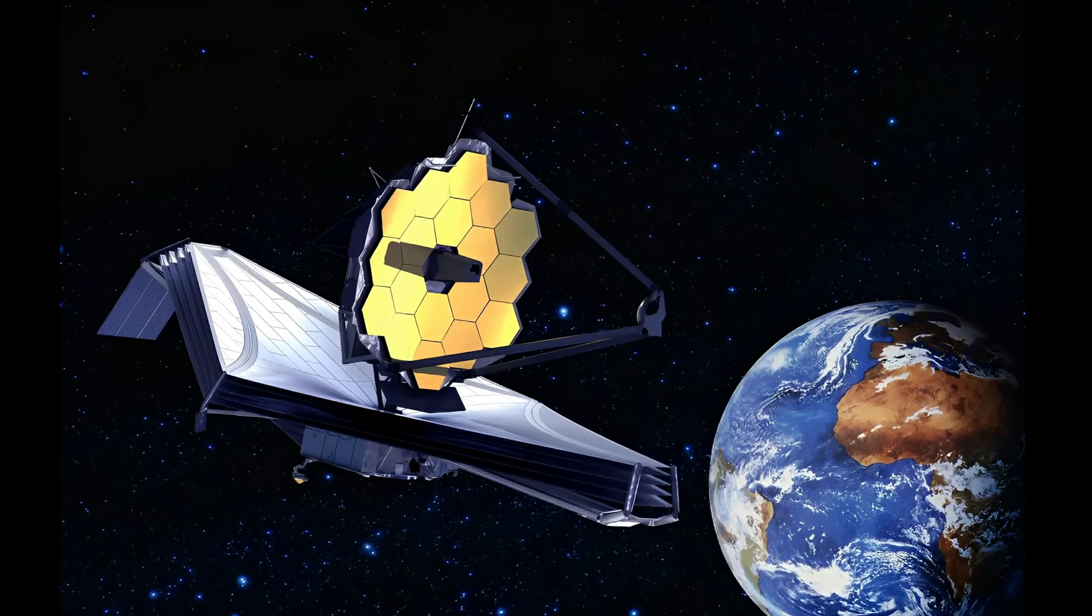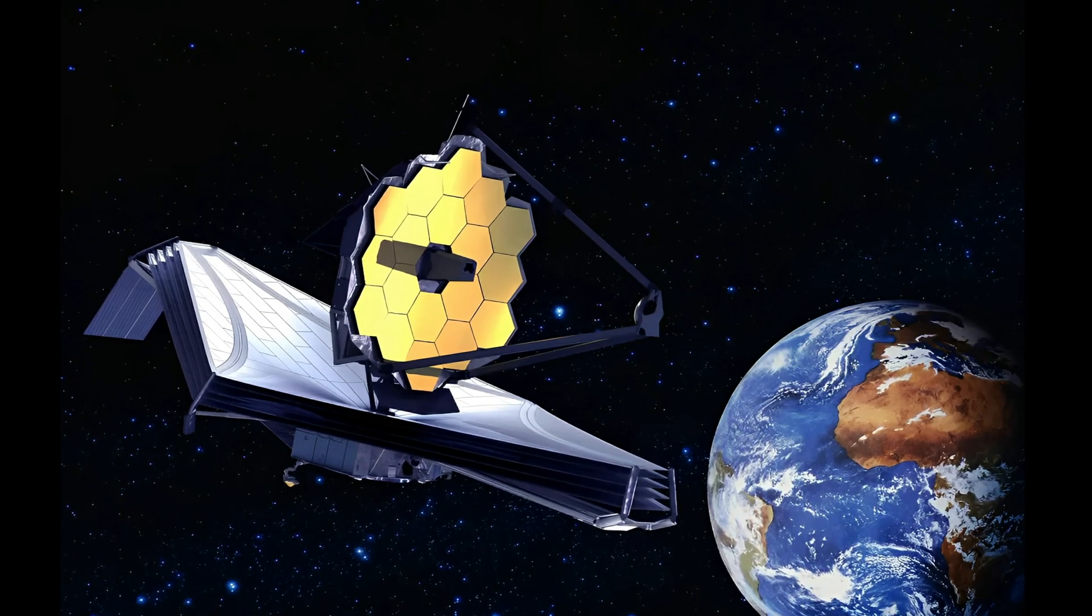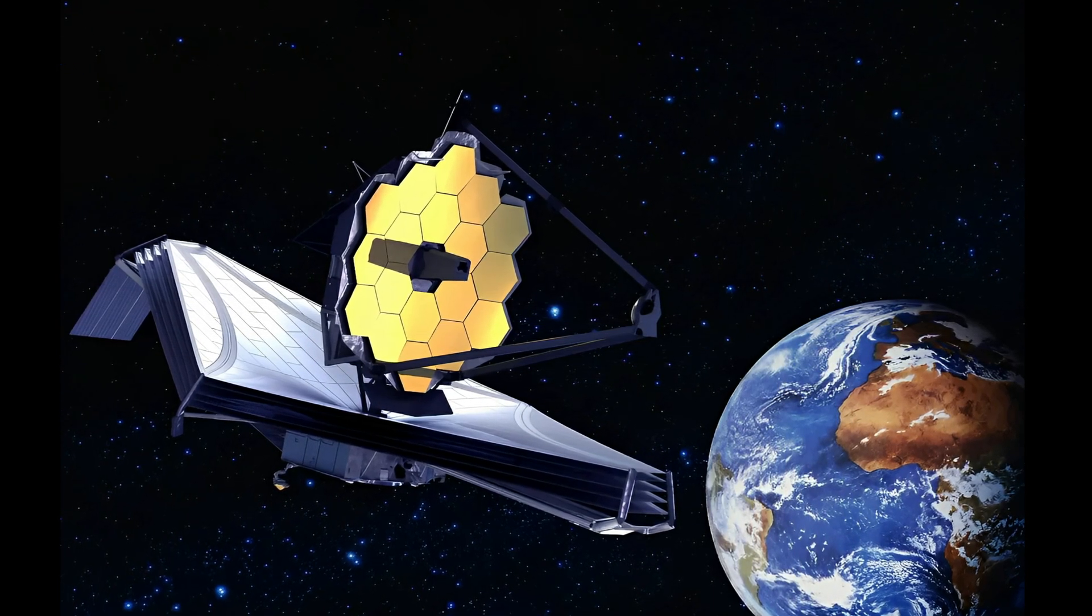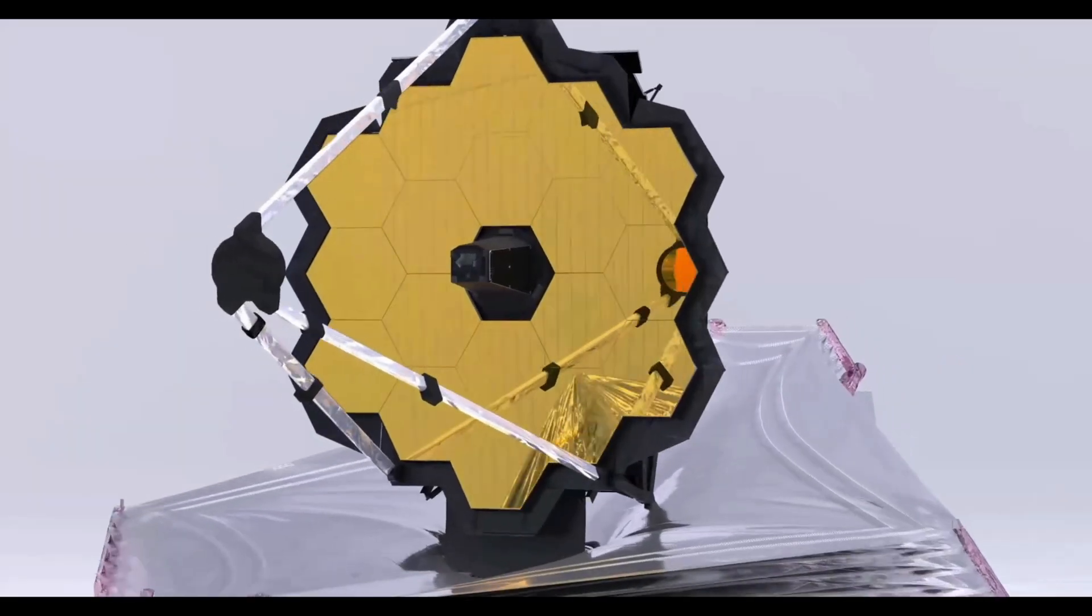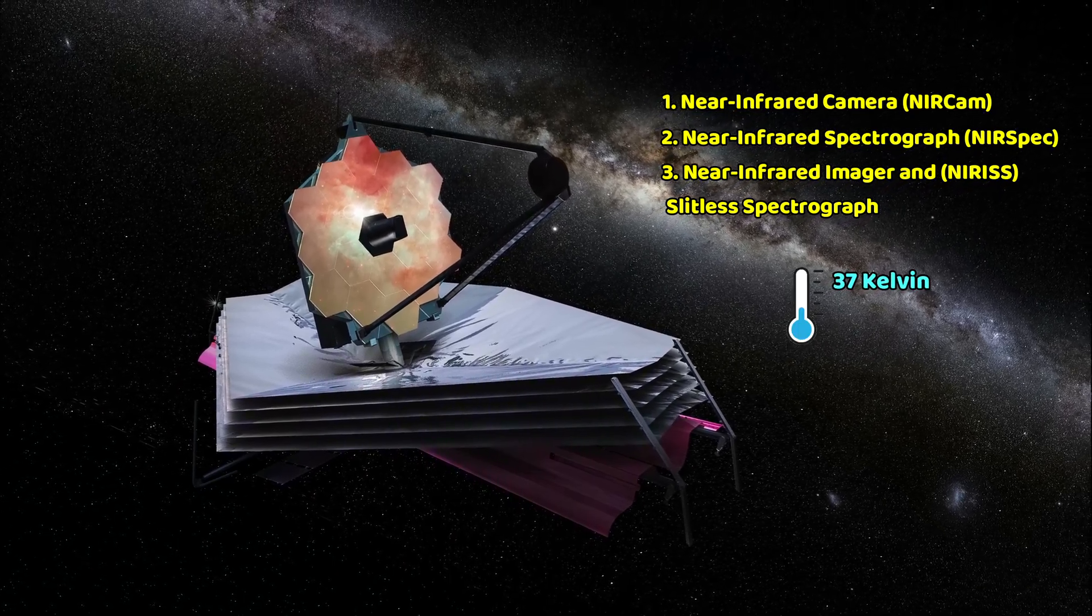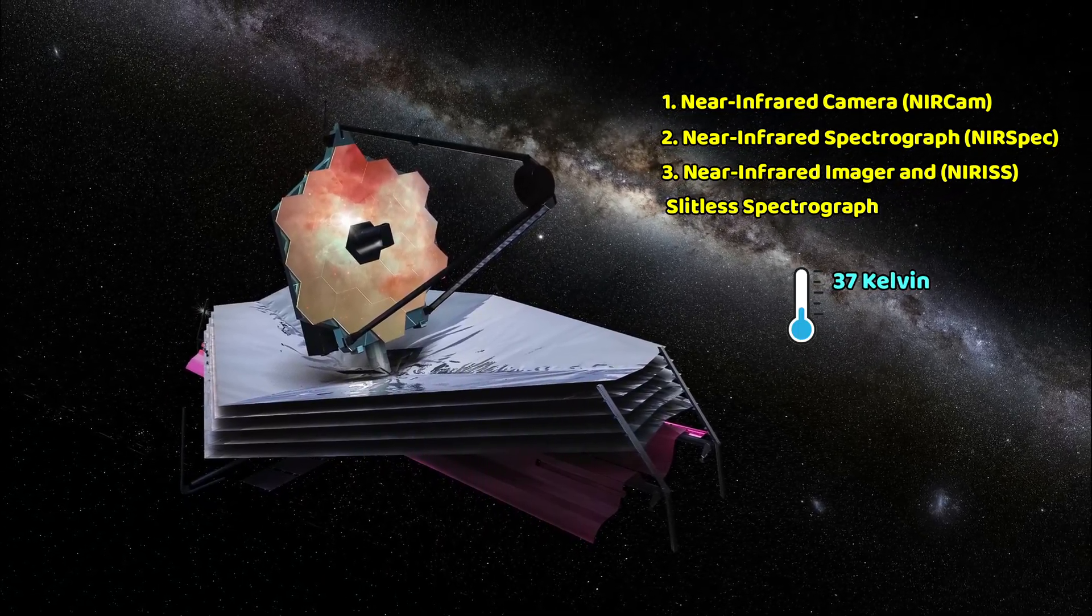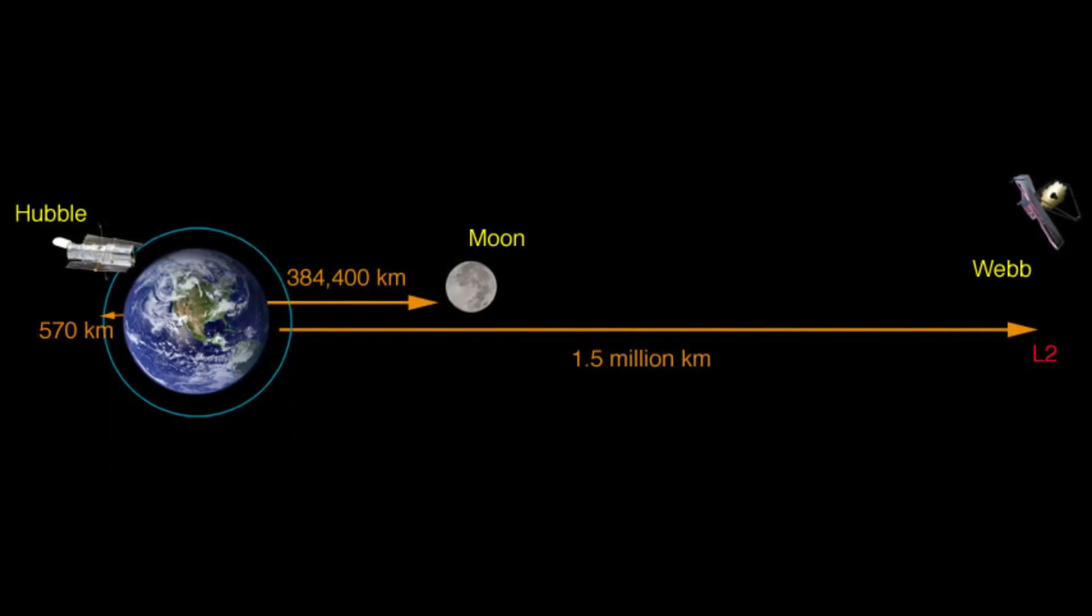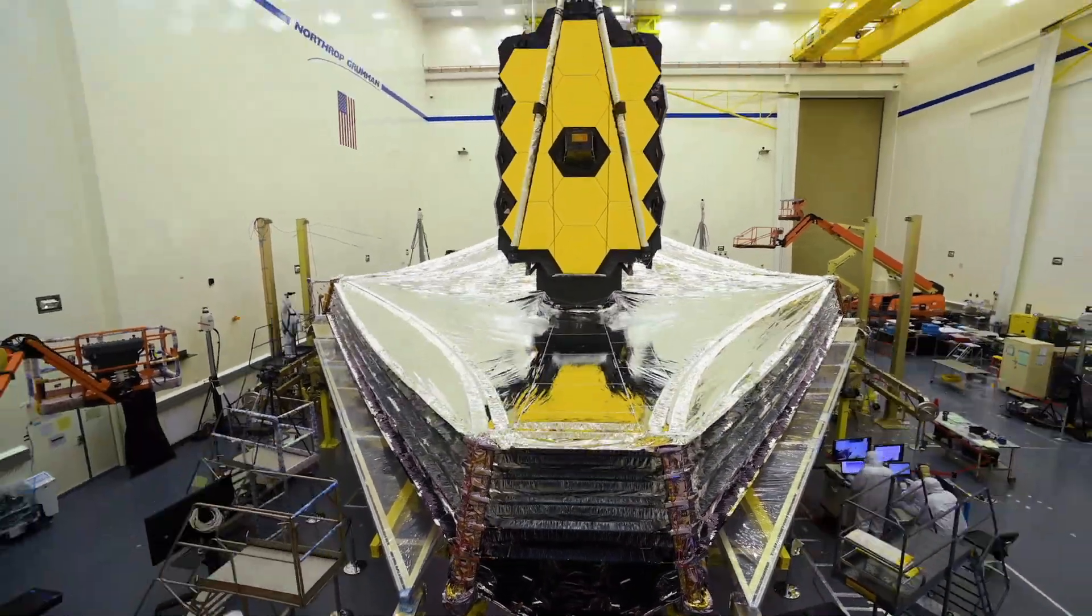The whole reason Webb is placed so far away from Earth is to protect the telescope from the light and heat of the Earth, and even the Moon. Webb's optics and its four main scientific instruments need extreme low temperatures to function, where three of its instruments needed a temperature of 37 Kelvin which was achieved by simply positioning the telescope far away from Earth, and adding a massive five-layered sun shield.